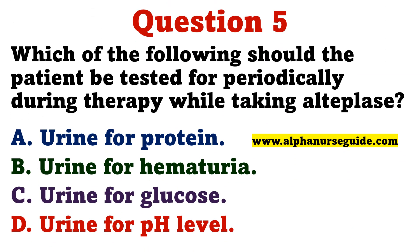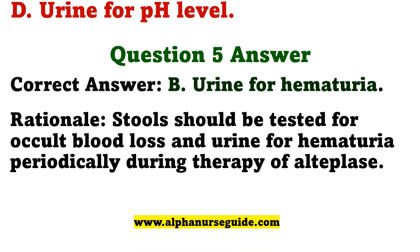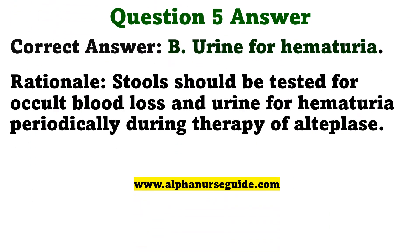Practice question: Which of the following should the patient be tested for periodically during therapy while taking Alteplase? A. Urine for protein. B. Urine for hematuria. C. Urine for glucose. D. Urine for pH level. The correct answer is B — urine for hematuria. Stools should be tested for occult blood loss and urine for hematuria periodically during therapy of Alteplase.